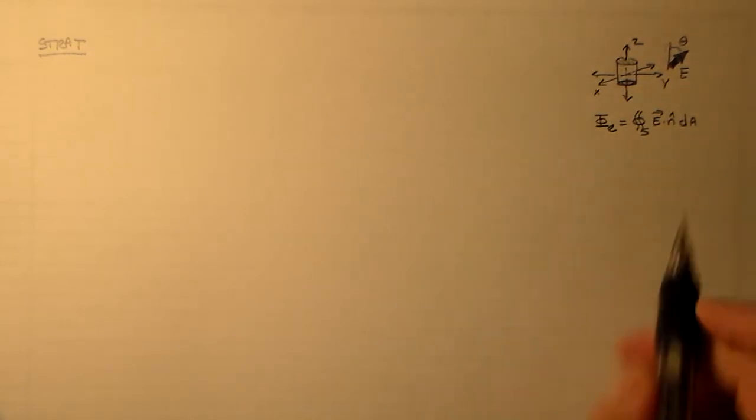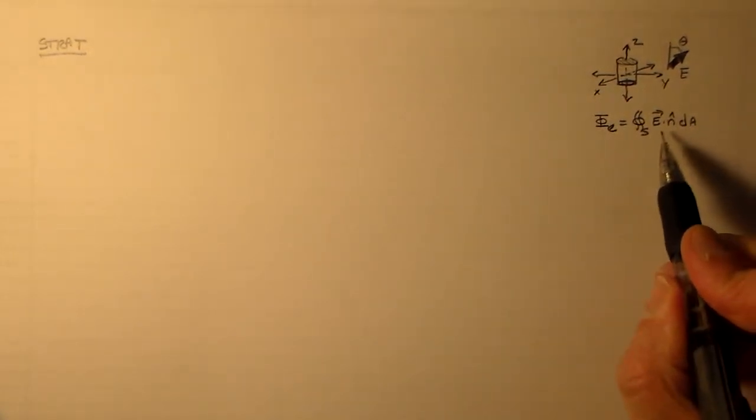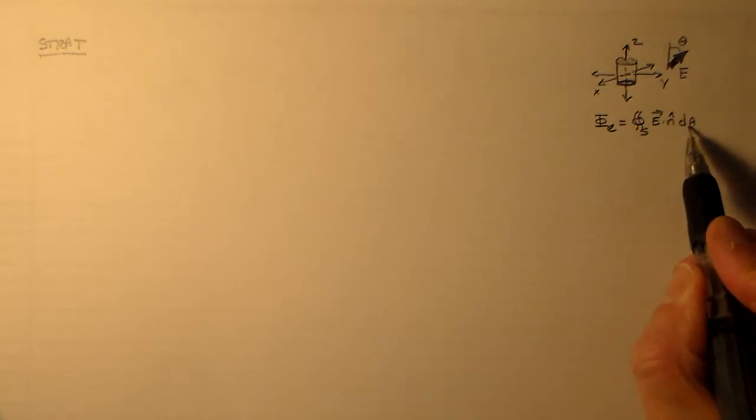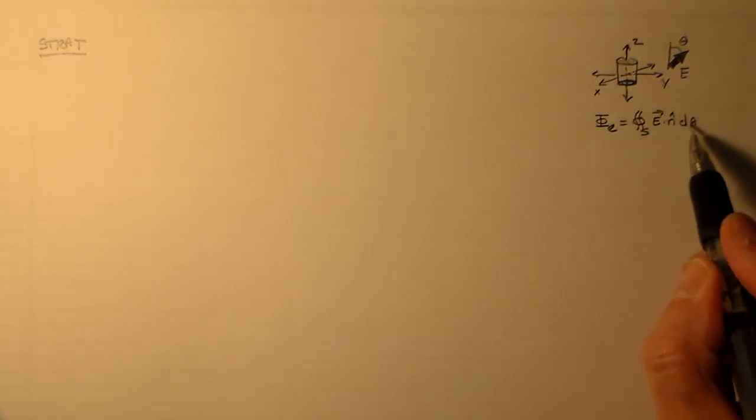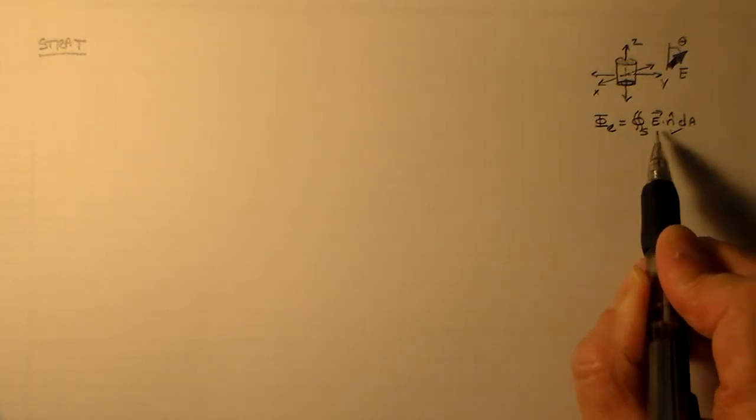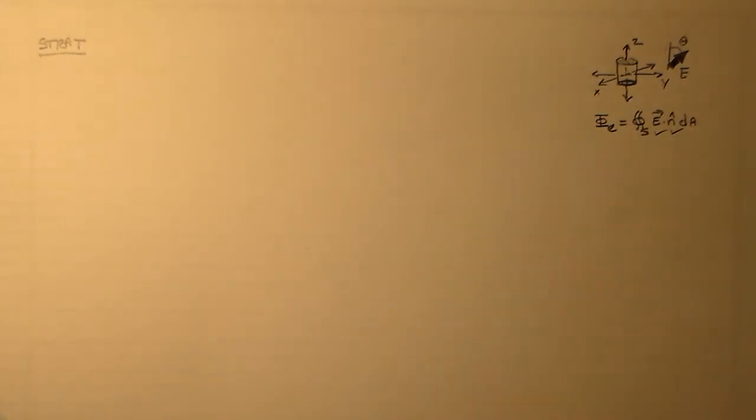Whatever this area is for the surface, for the coordinate system. So what we're going to need to do is find n and find e, and then we can find phi. Fairly simple.